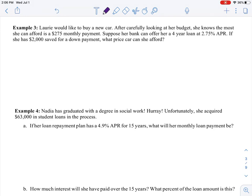Okay, so here's example three and four. Example three says Lori would like to buy a new car. After carefully looking at her budget, she knows she can afford $275 monthly. Suppose her bank can offer her a four-year loan at 2.75% APR. If she has $2,000 saved for a down payment, what price can she afford?